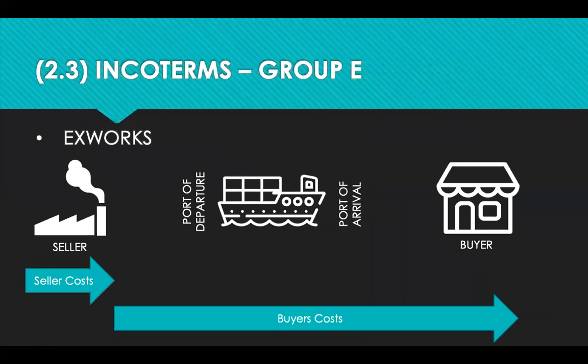We're now going to look at IncoTerms. IncoTerms stands for International Commercial Terms. They're devised by the International Chamber of Commerce and indicate how costs and responsibilities are assigned between the buyer and the seller. It's concerned only with who has responsibilities for the goods, licences, and clearances at the different stages of delivery. It doesn't cover the question of when ownership is transferred from the supplier to the buyer, so this needs to be negotiated separately. The more the buyer pays for, the more control they have; the more the supplier pays for, the more they control.